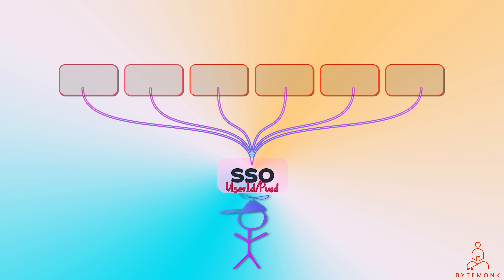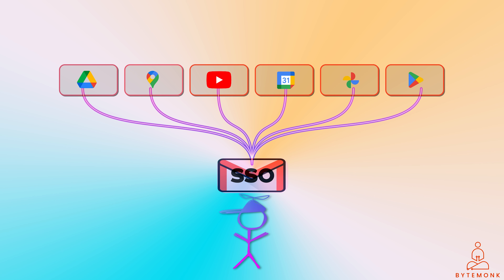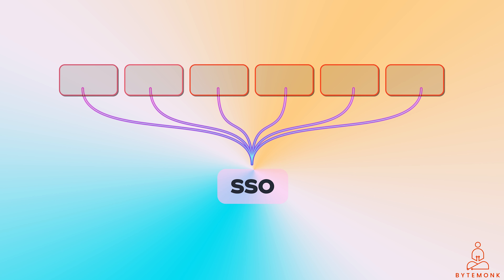For example, when you log into Gmail, you are automatically granted access to your accounts in Google-owned applications like Google Drive, YouTube, and Maps. There are different implementations of SSO, but the general flow and main players are almost the same. SAML, OpenID Connect, and WS-Federation are common open standards for SSO.